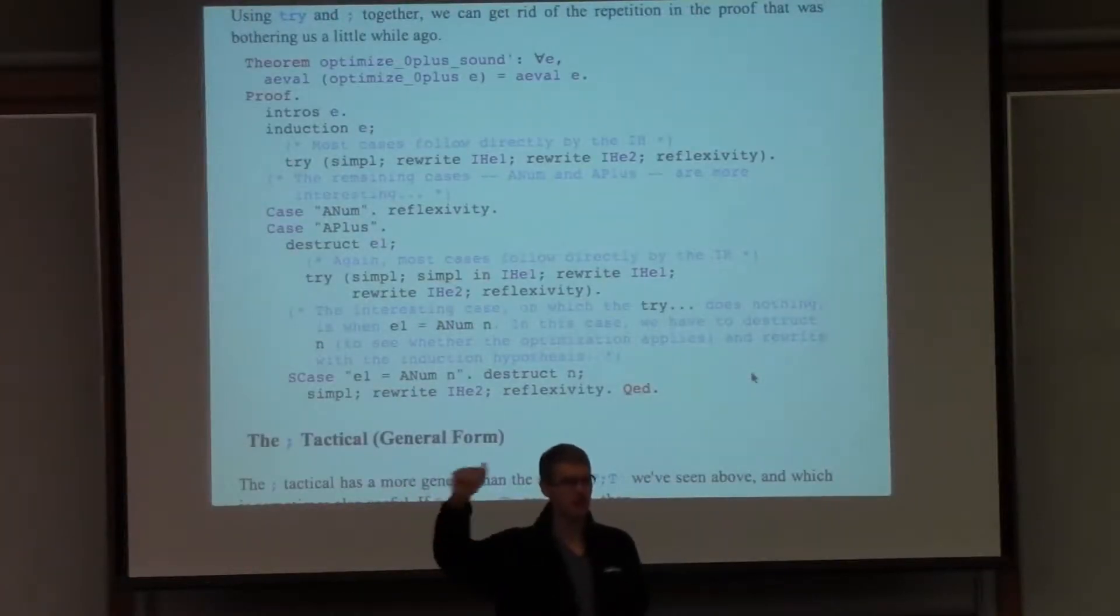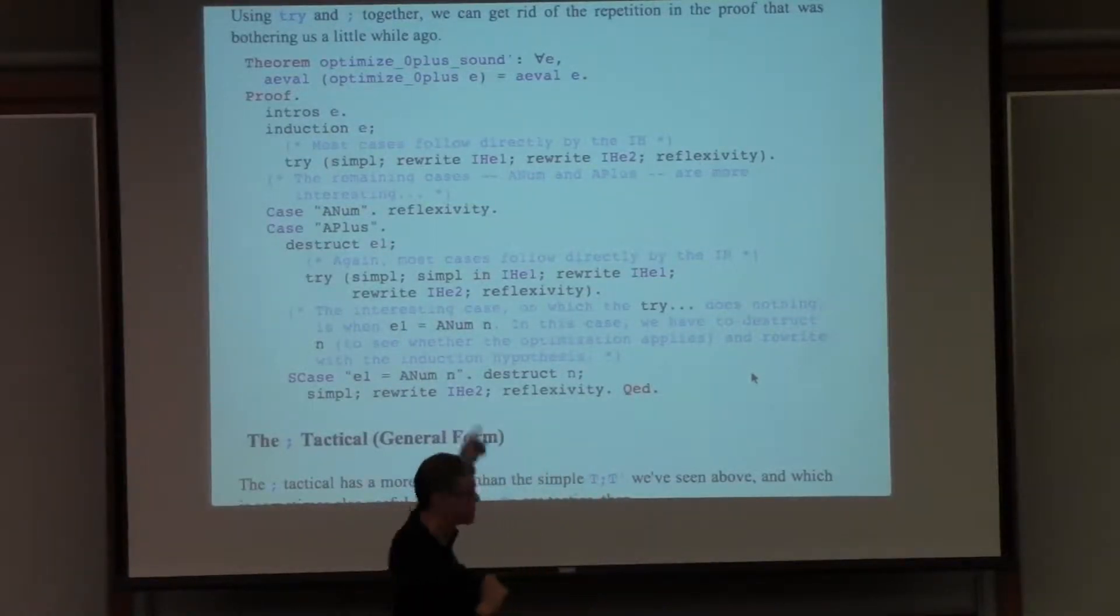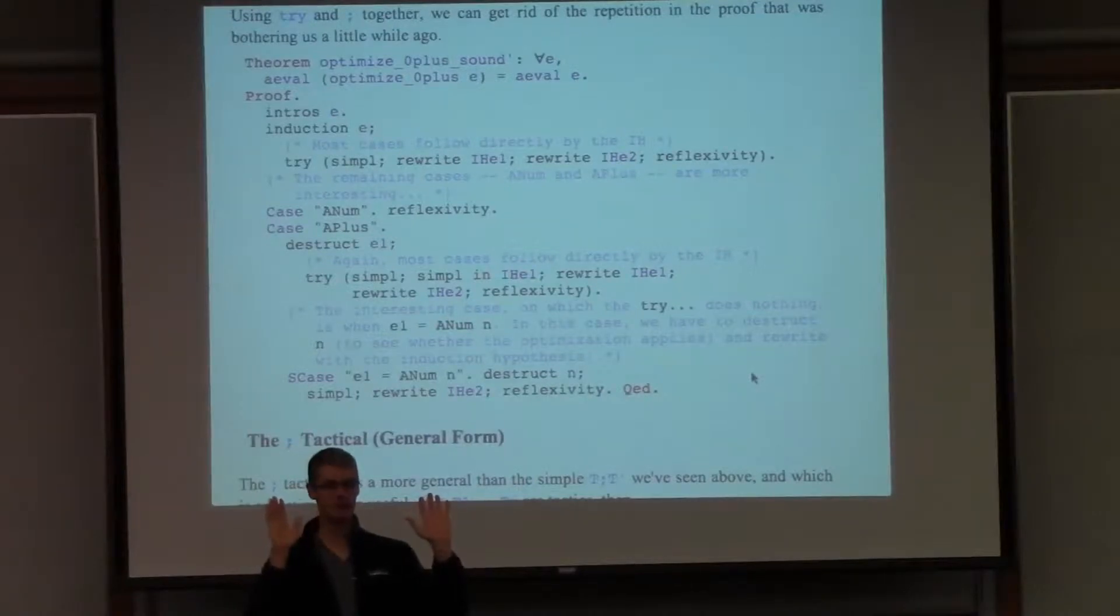Induction semicolon something - the something is going to get applied to each case of the induction. And in this proof, several of them will just disappear because what happens after the semicolon completely takes care of all of the subgoals of that case of the induction.